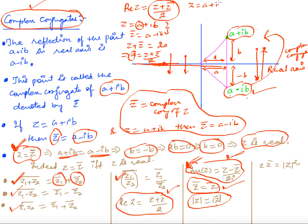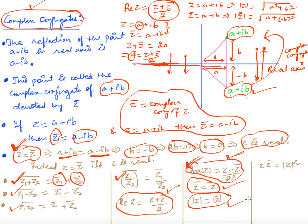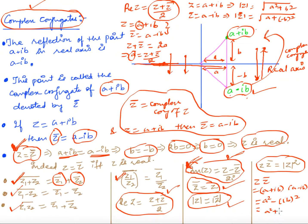Also, |z| equals |z-bar|: since z equals a + iota b has modulus sqrt(a²+b²), and z-bar equals a minus iota b has modulus sqrt(a²+(−b)²) = sqrt(a²+b²), they are equal. Additionally, z times z-bar equals (a + iota b)(a minus iota b) equals a² minus (iota b)² equals a² plus b², which is |z|². This important relation will be used repeatedly.